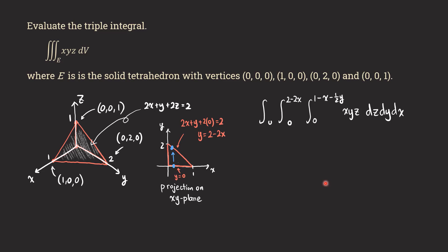One thing to be careful about: for the upper limit of y, don't just put the constant 2, because at a different x-position the value is not 2. The outermost integral for x uses constants — 0 to 1 — because we've already accounted for the line segment in the middle integral. But for the inner (y) integral we need a variable function, 2 − 2x, as the upper limit to cover all points on that line segment.